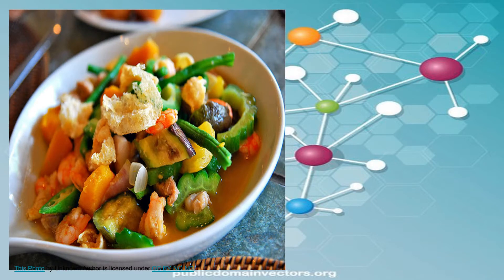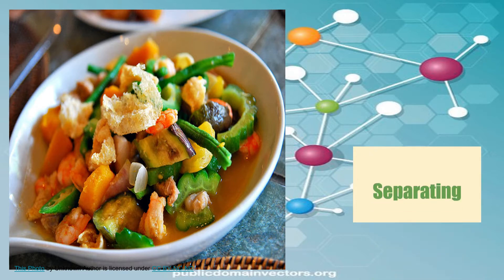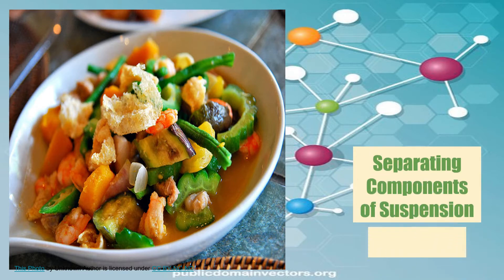This yummy dish is called pakbet. How do you call this in your place? This is an example of suspension. Its chunky ingredients can be separated by hand-picking. Some would only choose the vegetables that they love and leave out the vegetables that they don't like.